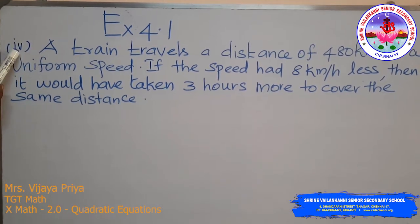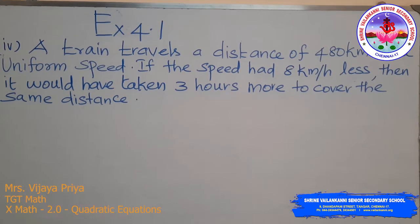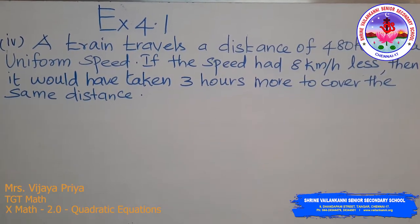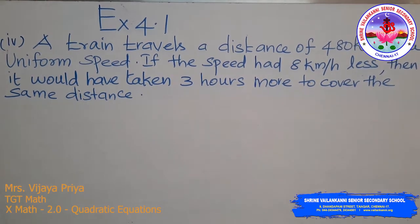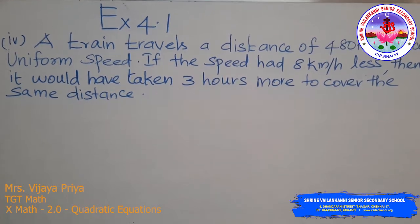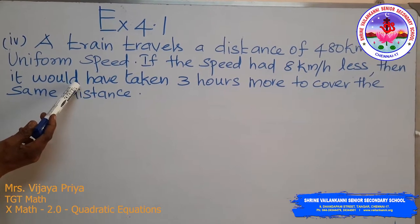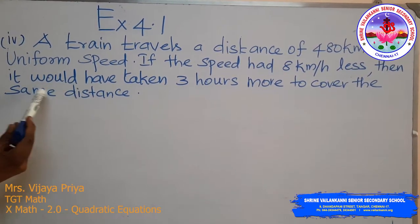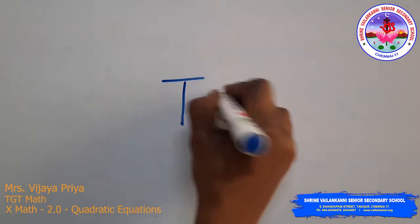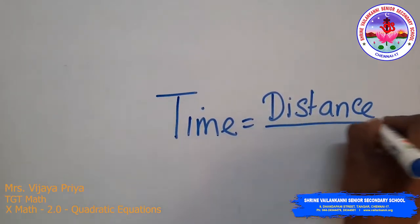Fourth subdivision of the second problem: a train travels 480 km at a uniform speed. If the speed were 8 km/h less, it would take 3 hours more to cover the same distance. We will frame this as a quadratic equation.